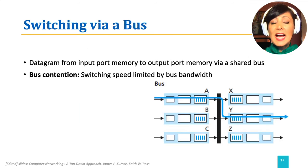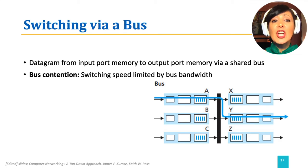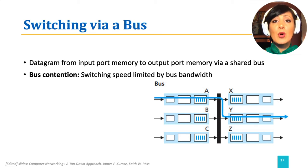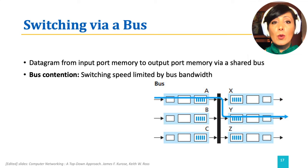In switching via bus, an input port adds an internal label to the packet that identifies the output port it should go to, then puts it on a shared bus. All output ports will see the packet on the bus, but only the port whose label matches the packet's label will keep the packet, and the other ports will discard it.